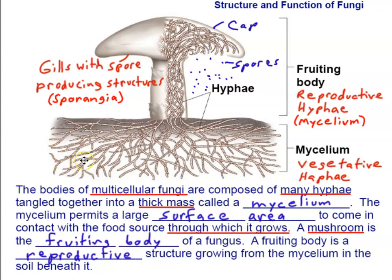Zooming out, we can see that hyphae form a big tangled mat known as a mycelium. Here is a toadstool growing in the soil, with hyphae growing through the soil, feeding on organic material, and absorbing nutrients — this is known as vegetative hyphae, or vegetative mycelium. Mycelium is defined as a tangled mat of hyphae. We have vegetative mycelium growing below the soil, feeding and absorbing nutrients.